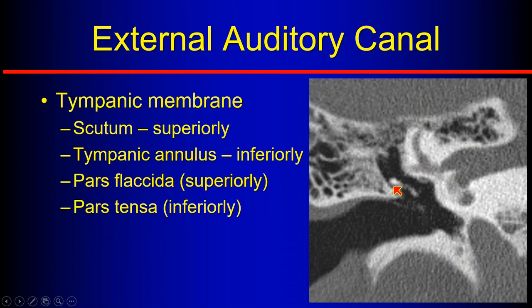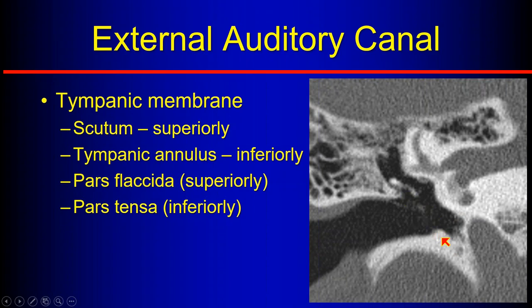On CT in the coronal plane, we see the scutum — the superior attachment of the tympanic membrane — and the tympanic membrane going down to the tympanic annulus inferiorly. Superiorly there is the pars flaccida, a more flaccid portion, and the pars tensa inferiorly. When we talk next time about cholesteatomas acquired from the tympanic membrane, this distinction becomes important in how they affect surrounding anatomy.